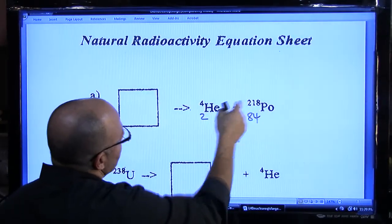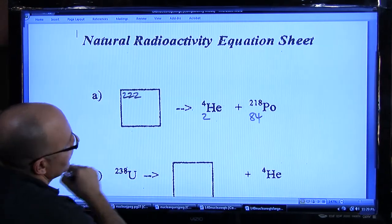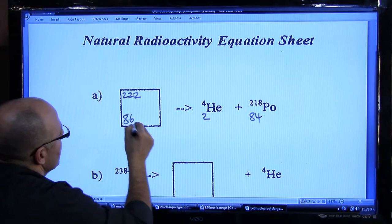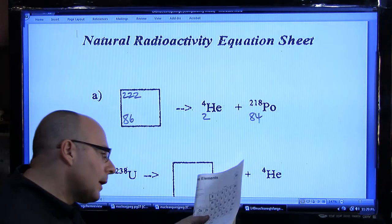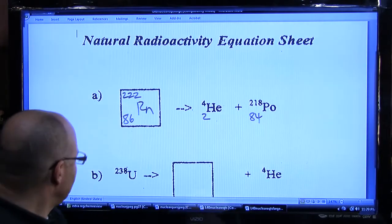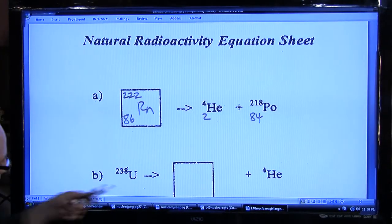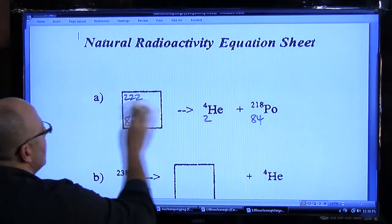So, 4 plus 218 gives us 222, and 84 plus 2 gives you 86. Now, look up that element. Number 86 is Rn, which is radon. All right, why don't you pause this for a second and try doing the next one.